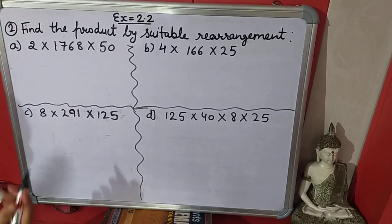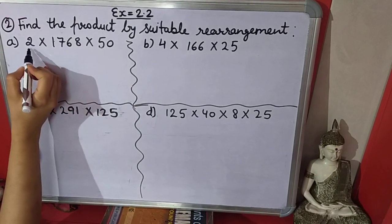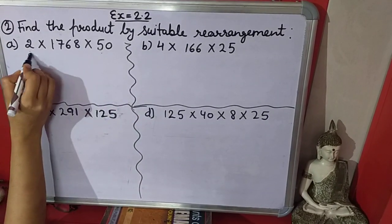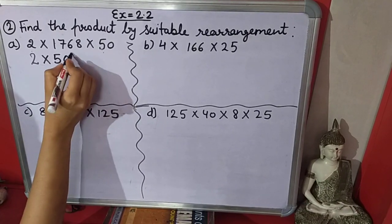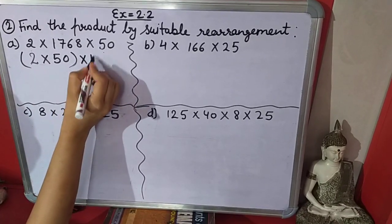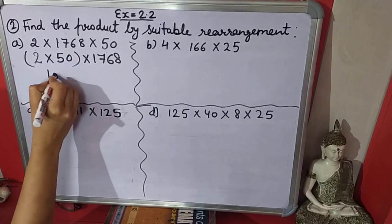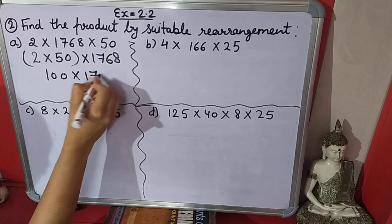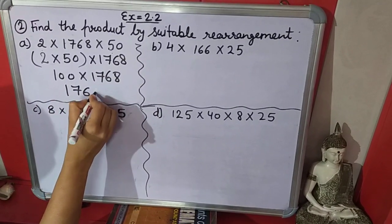To make the question easy, like 2 into 50, if we will write together it will be 100 into 1768. We will change the positions. So if 2 into 50 is 100, when we will multiply this number by 100, this number will come as the answer.